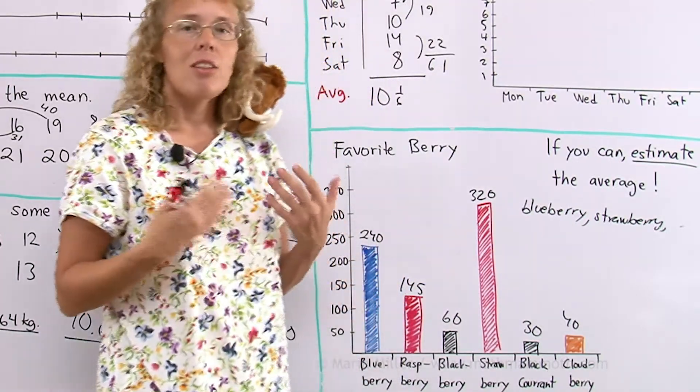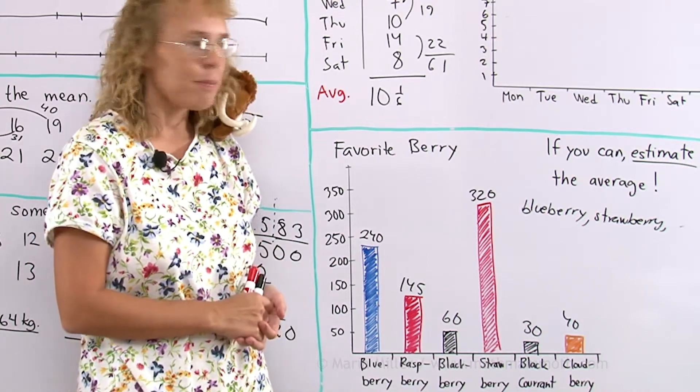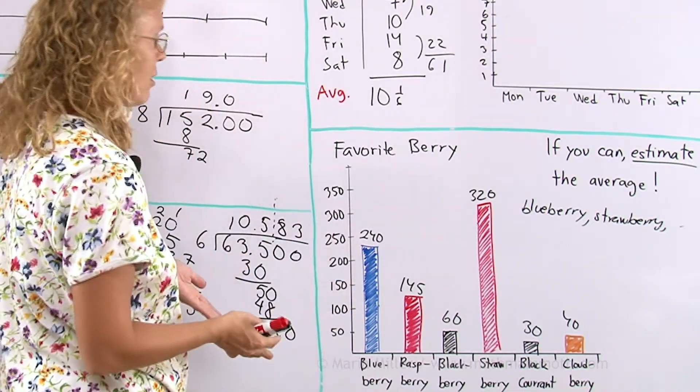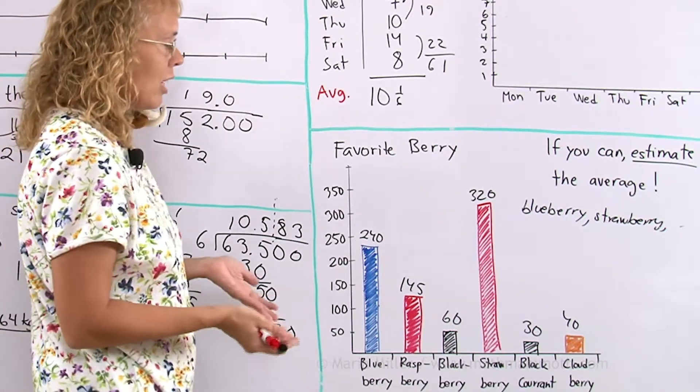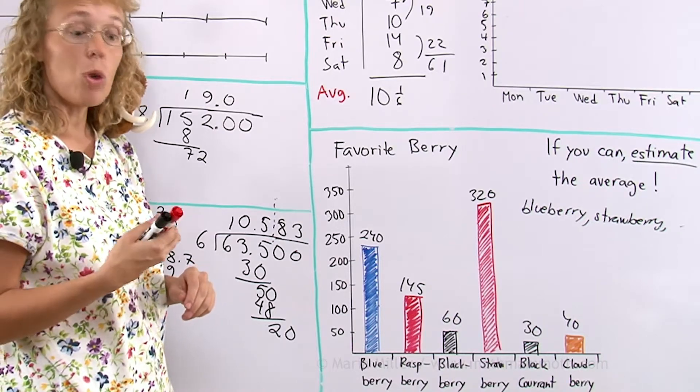And from that you cannot calculate anything because they are words. You cannot add them. So from this we cannot calculate average. You cannot calculate average from data that is just words.